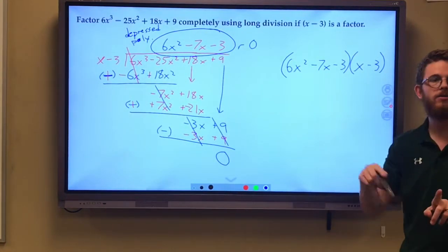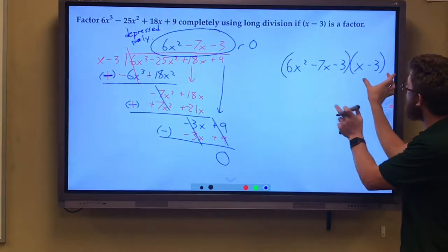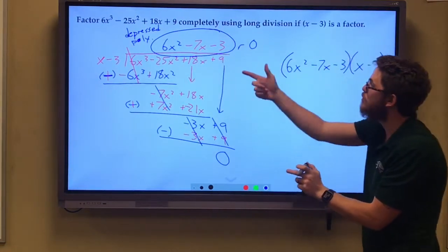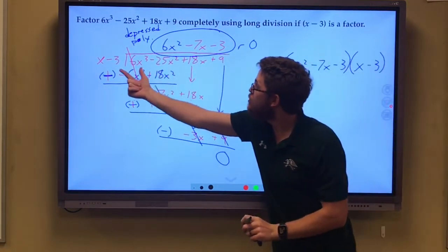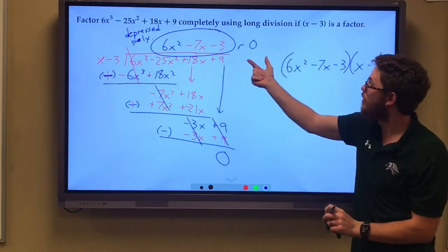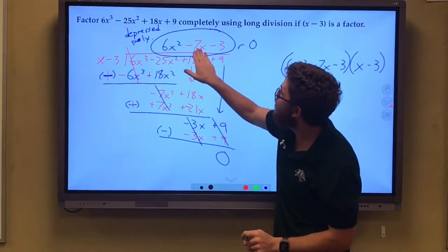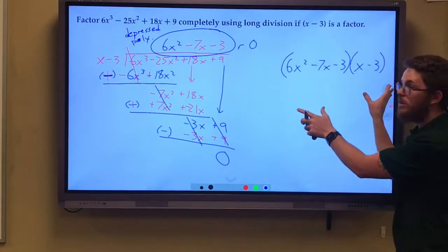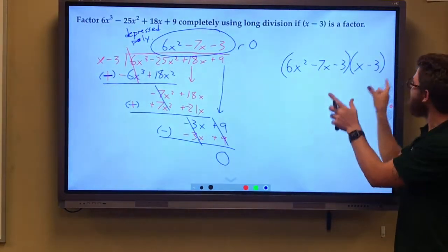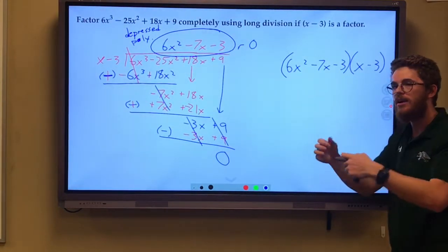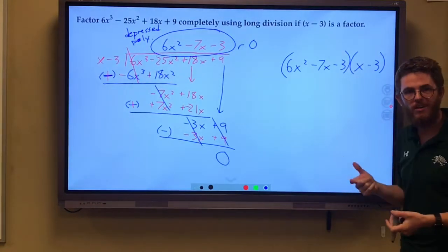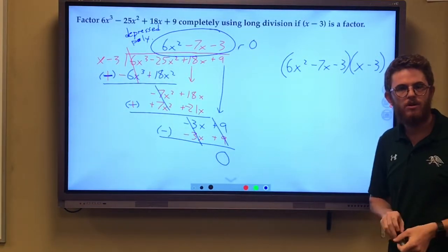If you didn't, you can always rewind and re-watch. This times this gives us our original. So by saying and showing that this gave me a remainder of 0, this times the depressed polynomial gives me my original. And so I've already factored through division.